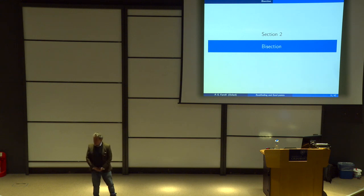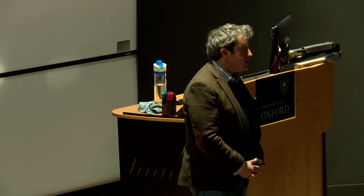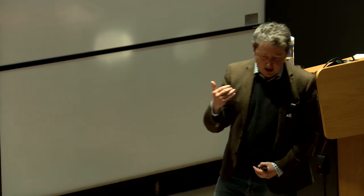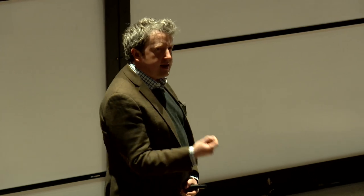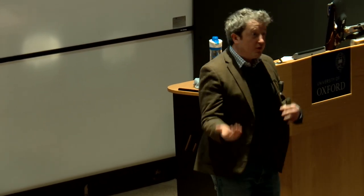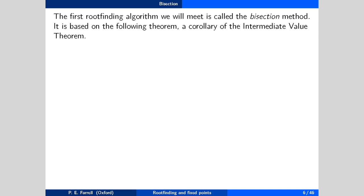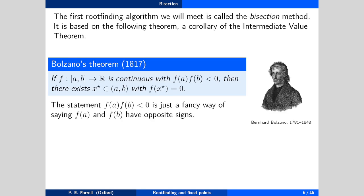Let's proceed by example. Let's meet our first root-finding algorithm — certainly not the last, and certainly not the first root-finding algorithm invented. In fact, bisection, the algorithm we're about to meet, is several millennia newer than algorithms known to the Babylonians and ancient Greeks, but it has a beauty of simplicity that makes it a very nice first root-finding algorithm to study. Our algorithms will be based on theorems, and we will prove theorems about algorithms. This first algorithm, bisection, is based on a corollary of the intermediate value theorem, proven by Bolzano in 1817.